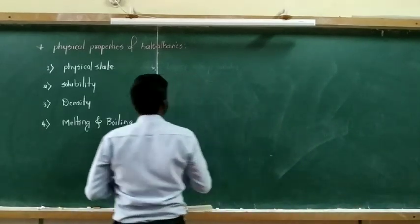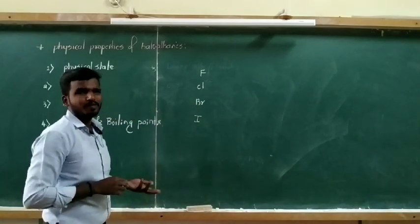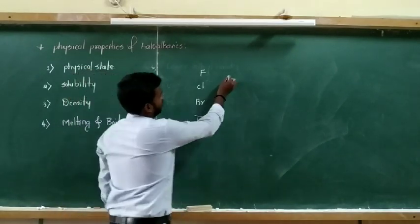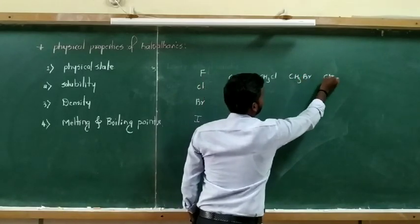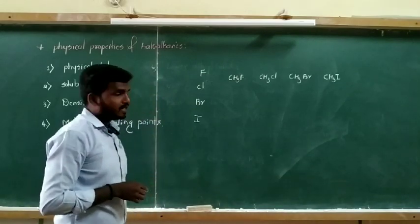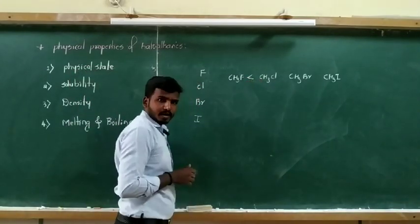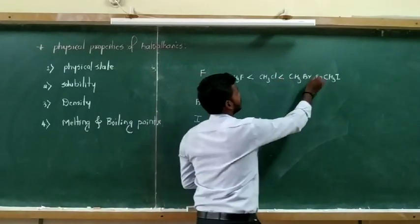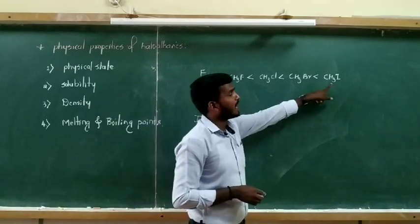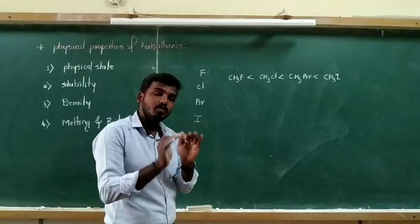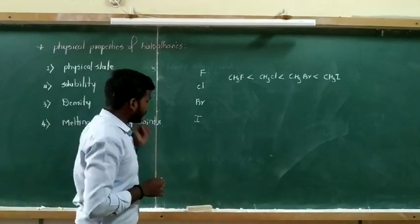In the halogen family, we have fluorine, chlorine, bromine, and iodine. As we move down the group, atomic mass increases. So among methyl fluoride, methyl chloride, methyl bromide, and methyl iodide, the order of density is: methyl fluoride has the least density, followed by methyl chloride, then methyl bromide, and methyl iodide has the highest density. So alkyl iodides have the highest density and alkyl fluorides have the lowest density, due to the atomic mass of the halogen.